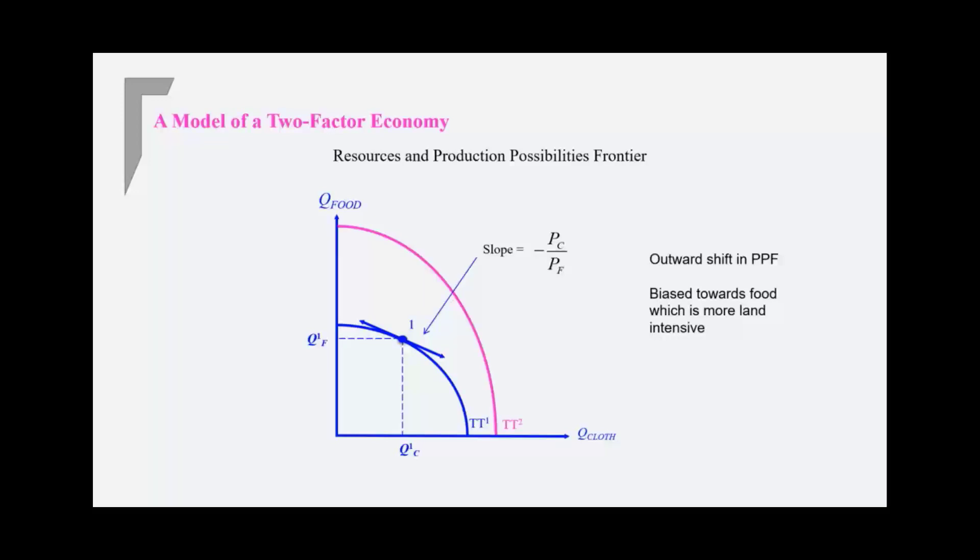What if the relative price of cloth is still the same? Well, then you have an ISO value or a price line, which is going to be parallel, and you're going to try and find a tangency point. So these two lines are parallel. And what you see is that the country, which has more land, produces more of food, no surprise there, but it produces less of cloth.